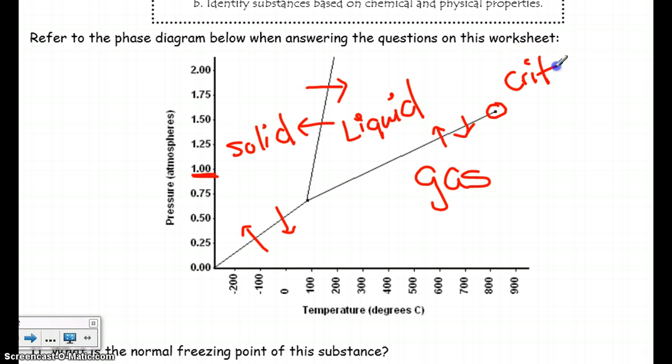This point right here is called the critical point. The critical point is the point at which we can no longer distinguish between the phases. So things get so crazy, such high pressure, such high temperature, that there are unpredictable characteristics in the substance.